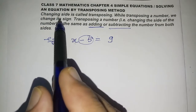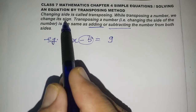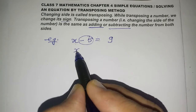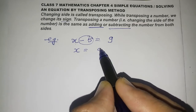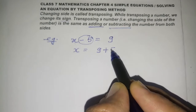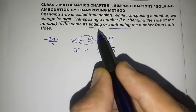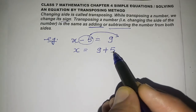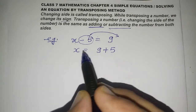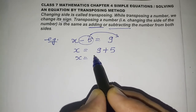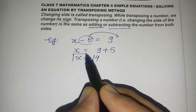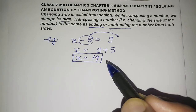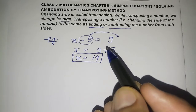When we change the number's side, we change its sign. So minus 5 becomes plus 5 on the right-hand side: x equals 9 plus 5, which gives x equals 14. See how we have solved the equation in a very easy manner without adding or subtracting on both sides.